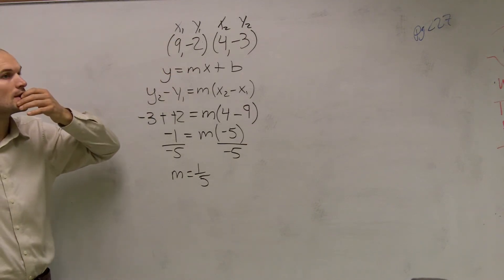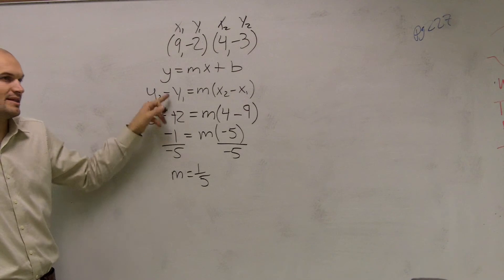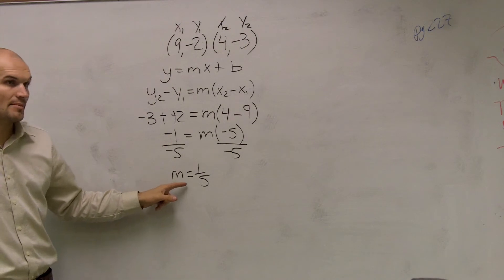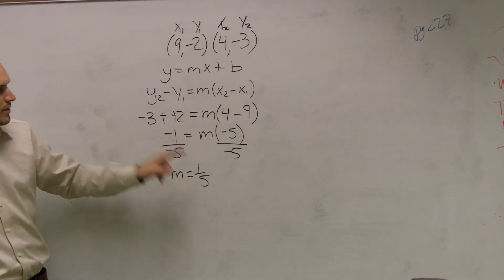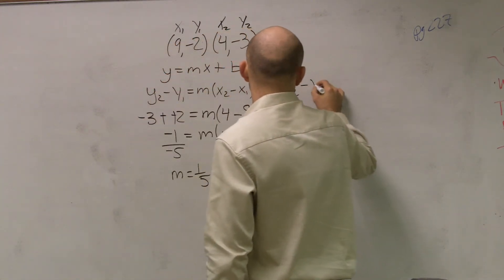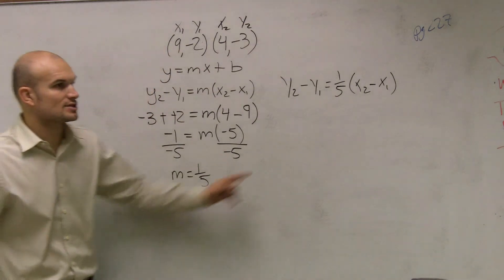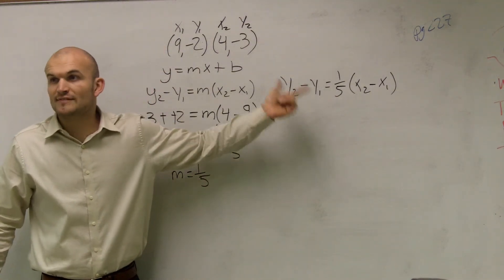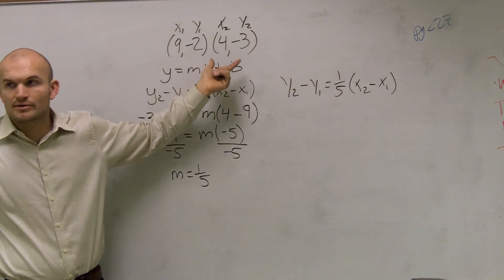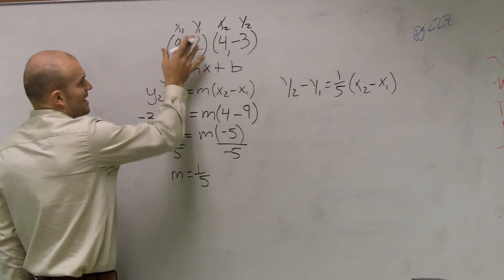That's a negative 3 minus a negative 2, so that doubled both positives to give me negative 1. So now I know my slope is m equals 1 fifth. What I'm going to do is plug that back in. Now I have my equation again with my slope. And remember, once you know what the slope is, you have to plug in a point. So here you have two points — which point do you plug in? It doesn't matter, you can plug in any point. I'll choose to plug in x1, y1.